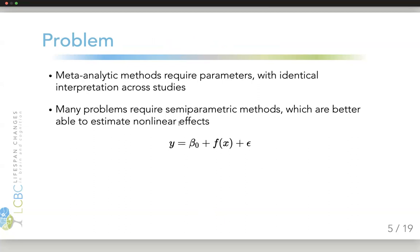For example, if you look at this linear regression example below, where we have an intercept beta naught, but rather than beta times x, some slope times some exposure, we have some unknown function f of x. This is called semi-parametric.